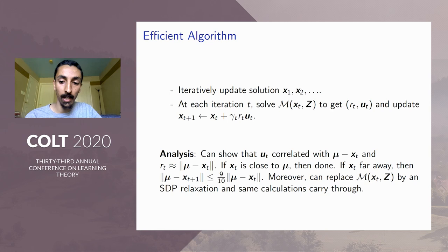So if our guess x_t is close to μ, we're done. We can just check this by looking at the value of r_t. On the other hand, if x_t is very far away from the true mean, then it can be shown that the distance between μ and x_{t+1} is a constant factor smaller, constant multiplicative factor smaller than the distance between μ and x_t. So if we iterate this procedure a few times, then x_t will converge to μ at a geometric rate. Moreover, they show that you can replace this inner maximization problem by its semidefinite programming relaxation. This is something which can be solved in polynomial time, and the same sort of analysis carries through.